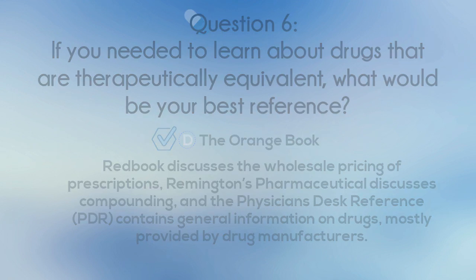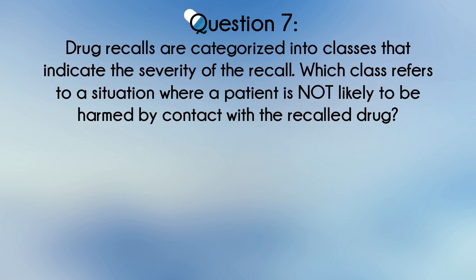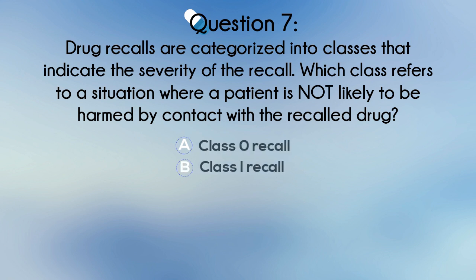Question 7. Drug recalls are categorized into classes that indicate the severity of the recall. Which class refers to a situation where a patient is not likely to be harmed by contact with a recalled drug? A. Class 0 recall. B. Class 1 recall. C. Class 2 recall. Or D. Class 3 recall.